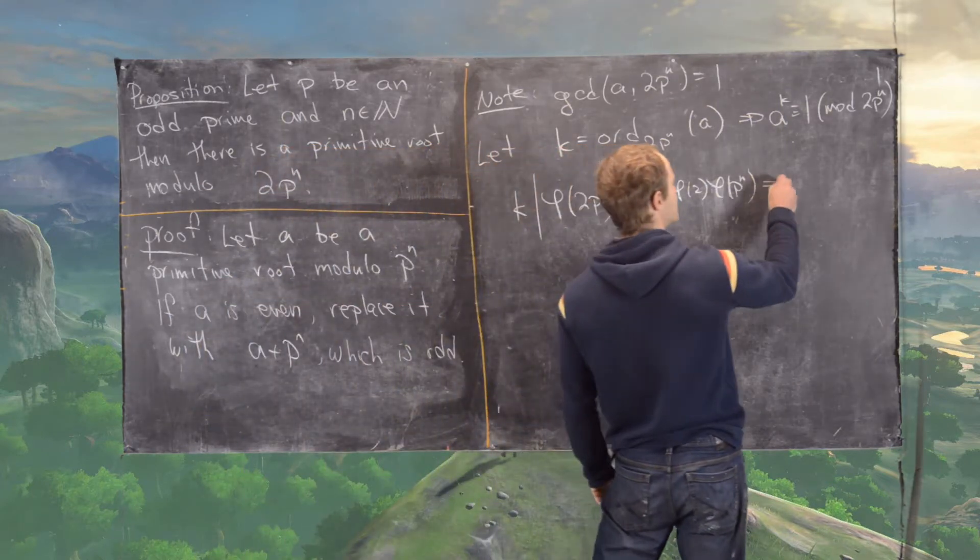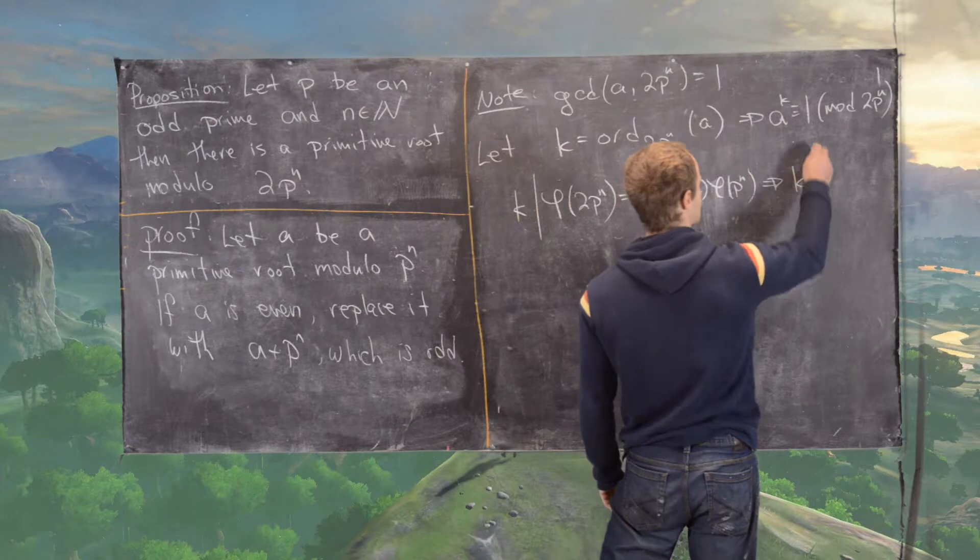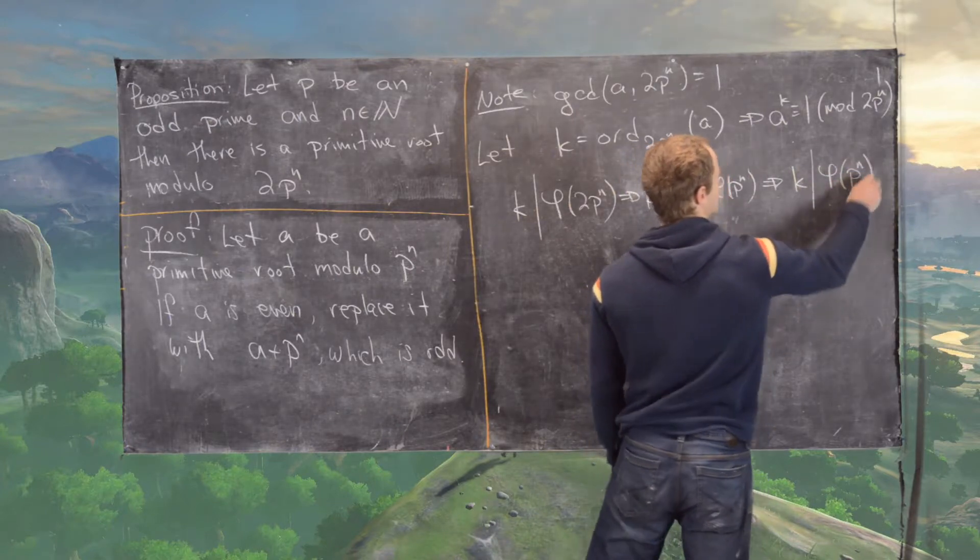But phi(2) equals 1, so what this really tells us is that k divides phi(p^n).